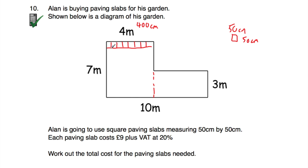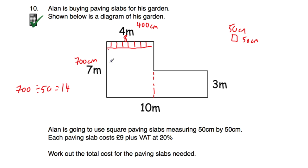Confirming the first section needs 112 pavement slabs. Now for the second section: the garden is 10m wide total, and 4m is already accounted for, so this section is 6m wide by 3m long. 600cm divided by 50 = 12 slabs per row; 300cm divided by 50 = 6 rows. So 6 times 12 = 72 slabs in this section.